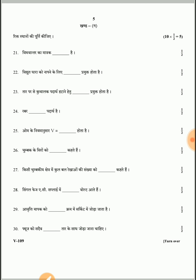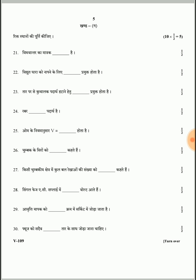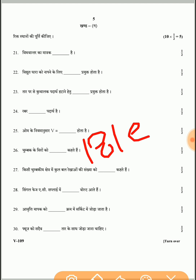Question 25: According to Ohm's law, V = IR, where V is voltage, I is current, and R is resistance. Question 26: The ends of a magnet are called poles. Question 27: The total number of magnetic field lines in a magnetic field is called flux.